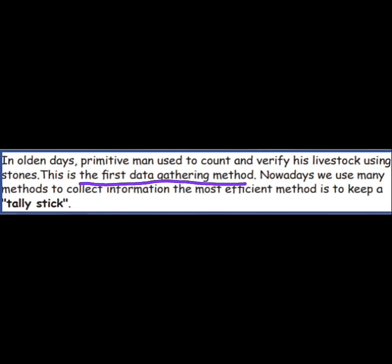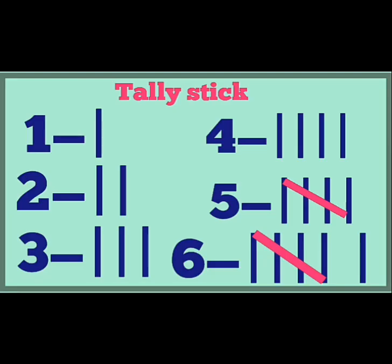This is the first data gathering method. Nowadays we use many methods to collect information. The most efficient method is to keep a tally stick. Nowadays we use the tally stick method. So in the tally stick method: 1 means one line, 2 means two lines, 3 means three lines, 4 means four lines. For 5, we draw four lines with one cross line. This is how we use the tally method.